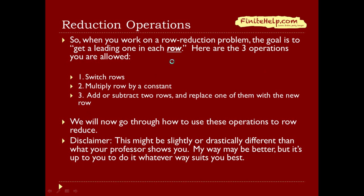So when you work on a row reduction problem, the goal is to get a leading 1 in each row. Here are three operations that you're allowed to do: you can switch rows, you can multiply a row by a constant, and you can add and subtract two rows and replace one of them with the new row. We will now go through how to use these operations to row reduce.